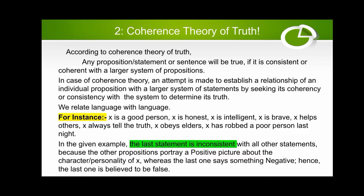For instance, we consider X as a person. X is a good person, X is honest, X is intelligent, X is brave, X helps others, X always tells the truth, X obeys elders — but then: X robbed a poor person last night. In this example, the last statement is inconsistent with all other statements, because the other propositions portray a positive picture of X's character, whereas the last one says something negative. Hence the last one is believed to be false.